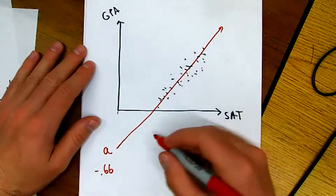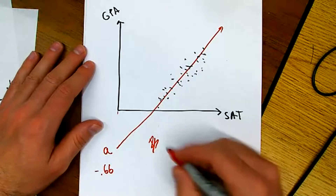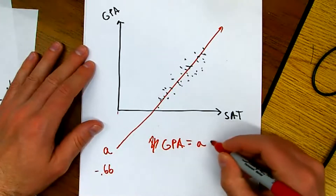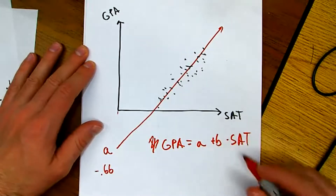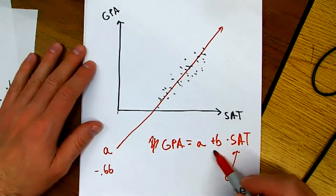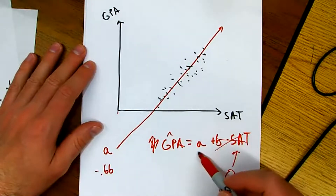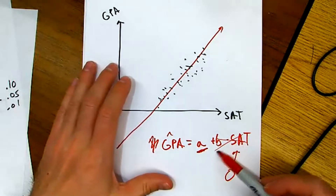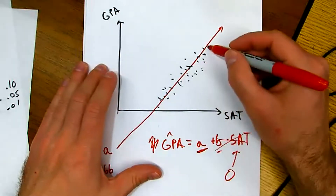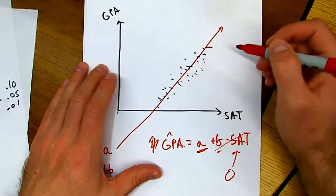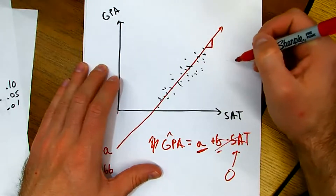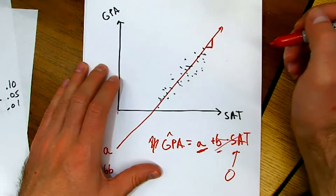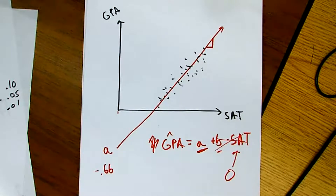The reason we interpret it that way: if we write GPA = A + B × SAT and the X variable is 0, the SAT term goes away and our predicted Y is just whatever the intercept is — that's why that's its interpretation. Similarly, the slope is interpreted as: if the X value goes up by one, that's the predicted increase in the Y value.